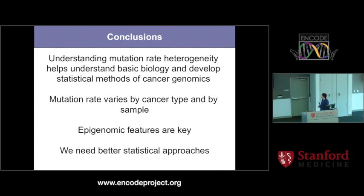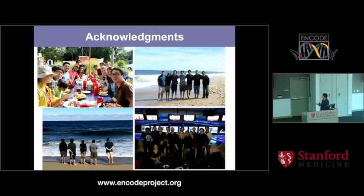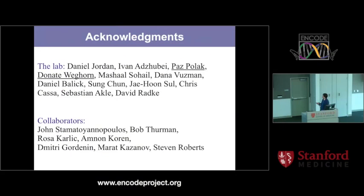The whole story is that understanding mutation rate heterogeneity helps understand basic biology and develop methods for cancer genomics. Mutation rate varies by cancer type and by sample, and epigenomic features are key to understanding it. We need better statistical approaches because there is a lot of confounding between the functional and epigenomic features we use to assign function and the same features that influence mutation rate — and that's the major complexity in the field. Thanks to my lab, especially Paz Polek, Donate Beckhorn, John, Bob, Rosa Carlitsch, Adnan Karen, Dimitri, Murat, Steve, Kelly Fraser, and Matteo D'Antonio.